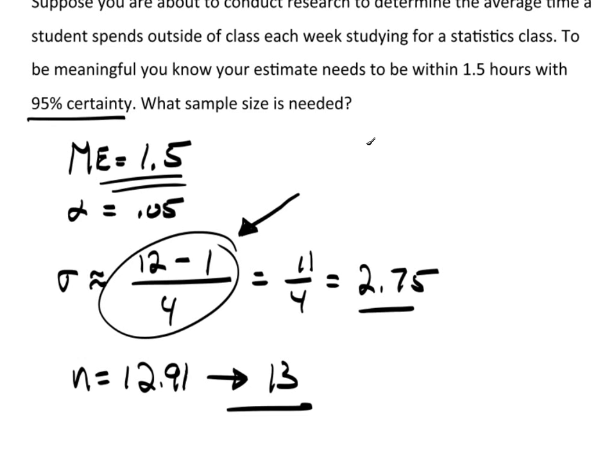Because, remember, this margin of error will look like the value of t, alpha over 2, on the appropriate degrees of freedom, s over the square root of n. So as s gets bigger and bigger, standard deviation gets bigger and bigger, which is the estimate for sigma, the only way to keep the margin of error small is if I increase the sample size. So mathematically, it makes sense.